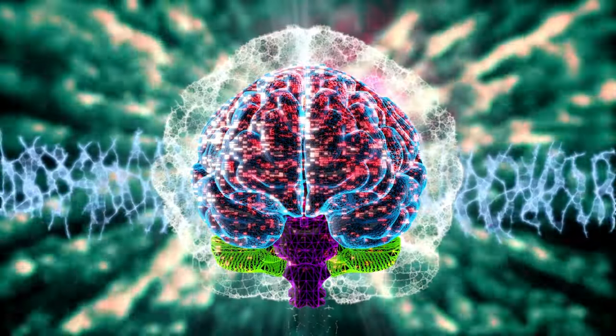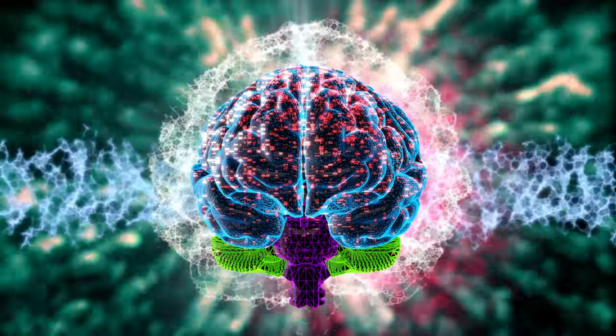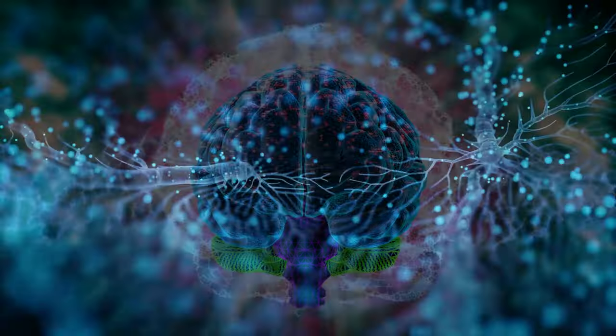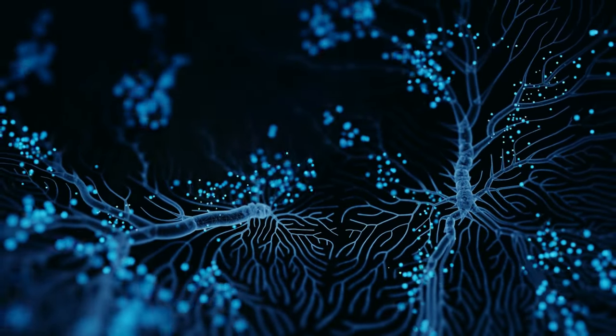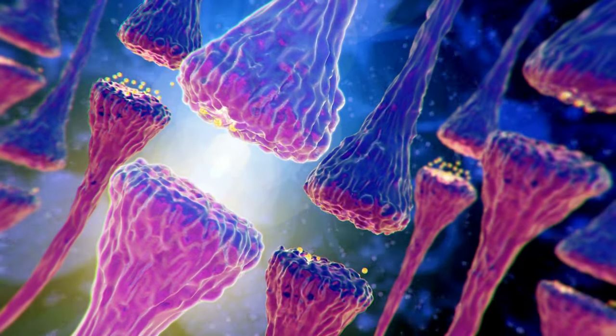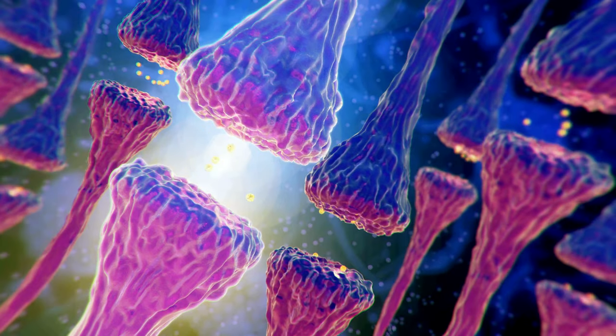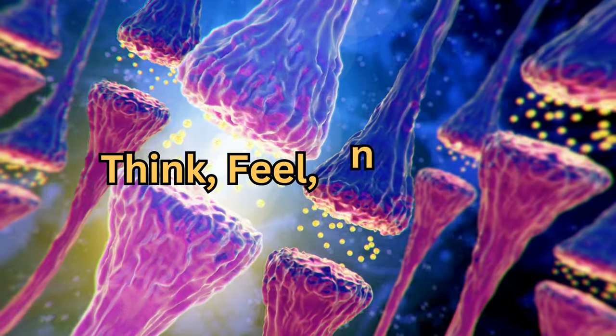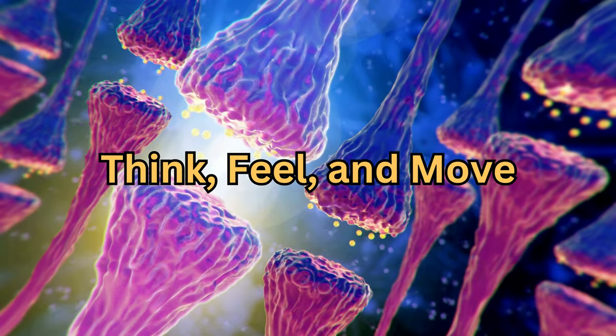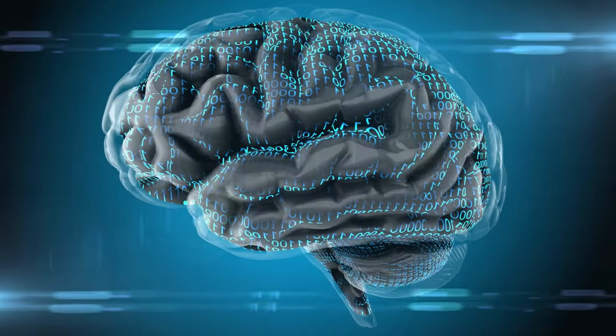The brain is the most complex object in the known universe. It is made up of billions of neurons, each of which is connected to thousands of others. This means that there are trillions of connections between neurons in the brain. This vast network of connections is what allows us to think, feel, and move. The brain is truly an amazing organ.